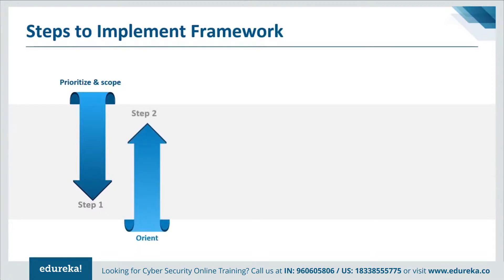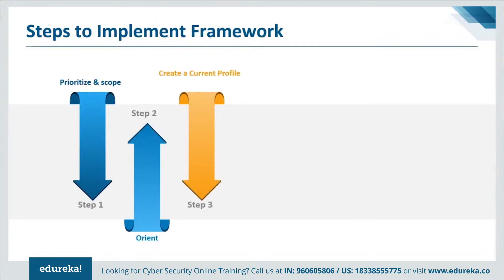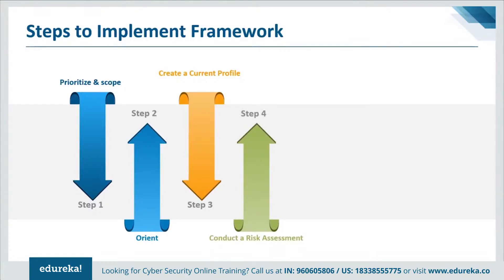Step two is to orient yourself. Once the scope of the cybersecurity program has been determined, the organization identifies related systems and assets, regulatory requirements, and overall risk approach. The organization then consults sources to identify threats and vulnerabilities applicable to those systems and assets. Step three is to create a current profile: the organization develops a current profile by indicating which category and subcategory outcomes from the framework core are currently being achieved. If an outcome is partially achieved, noting this will help support subsequent steps by providing baseline information.